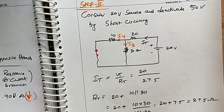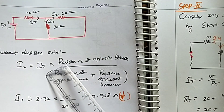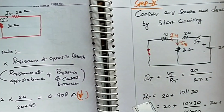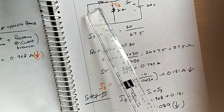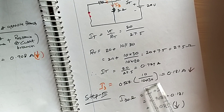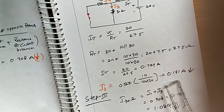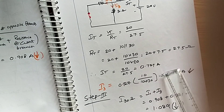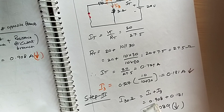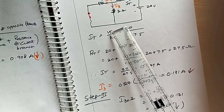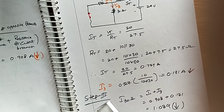From that, total current I = 20 / 27.5 = 0.727 amps, called I3. Using current division rule again: I3 through the 30-ohm branch = 0.727 × opposite branch resistance (10 ohms) / (10 + 30) = 0.181 amps. In step 3, both current directions are downward, so we add them: I_30Ω = I1 + I3 = 0.908 + 0.181 = 1.089 amps.